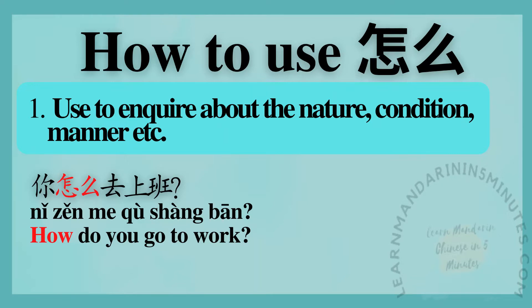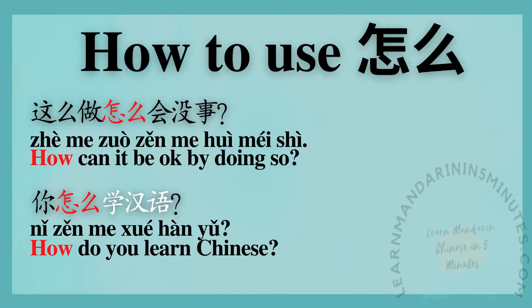Sentence examples. 你怎么去上班? — How do you go to work? 这么做 怎么会没事? — How can it be okay by doing so?